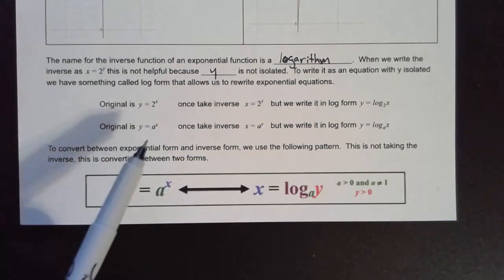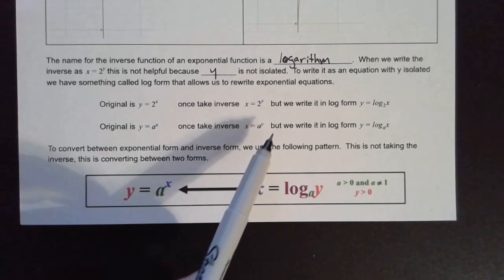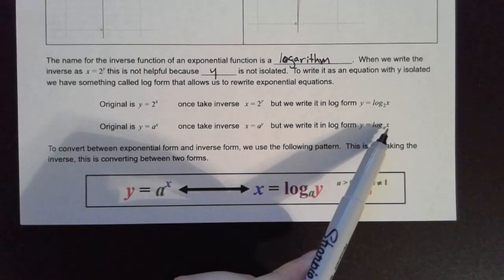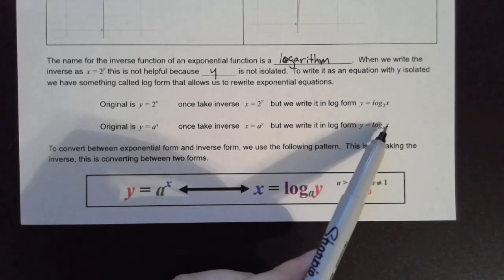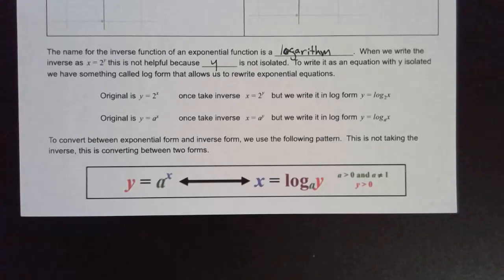We also have a more general form. Up here we used 2; here we're just using a. So given any base a, we switch our X and Y's, and to write it in log form we have log base a. The exponent goes to one side of the equation by itself, and what used to be our answer becomes the new argument: log base a of X equals Y.